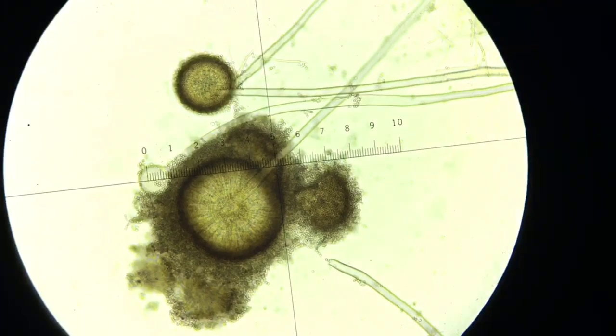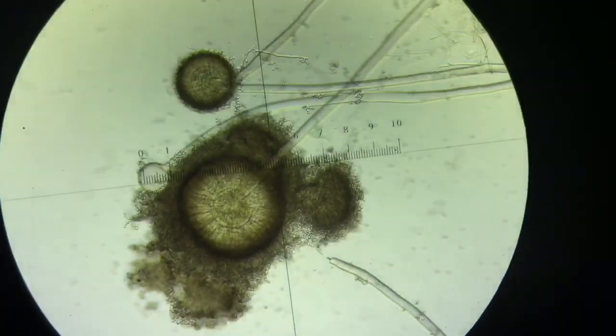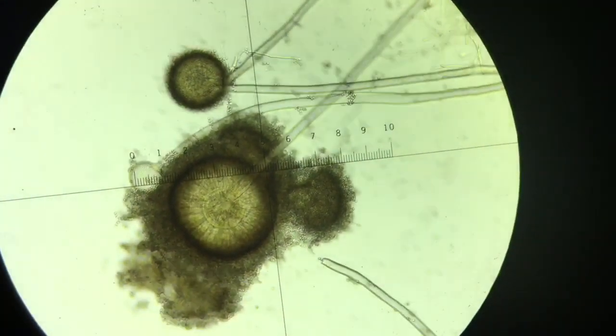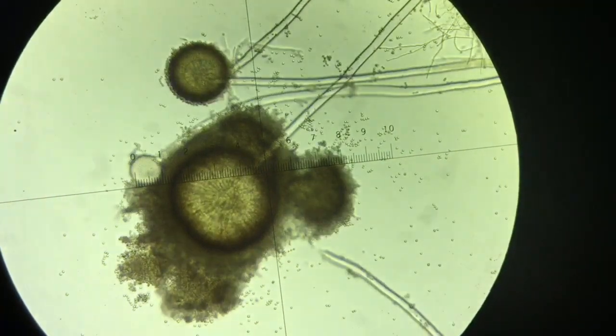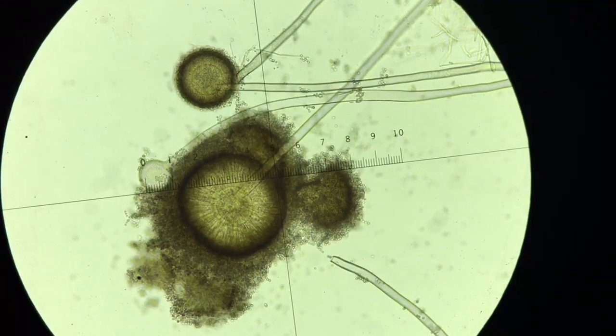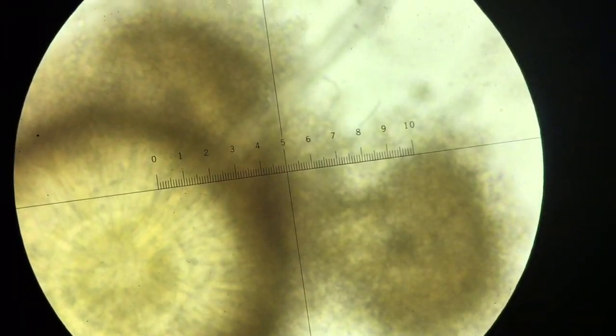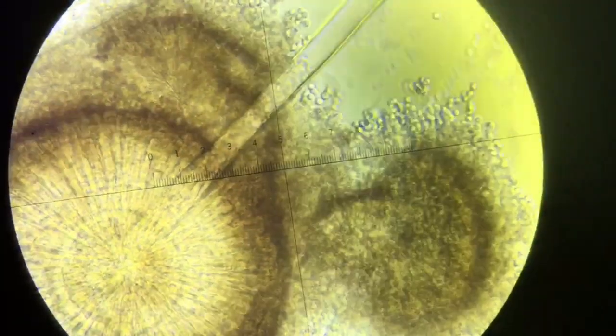So here we can see the head of the conidiophore. Now we can already see that it is similar to Rhizopus in many ways in that it has a non-septate hypha leading down to the mycelium and it has a round spore-bearing structure. The big difference is...